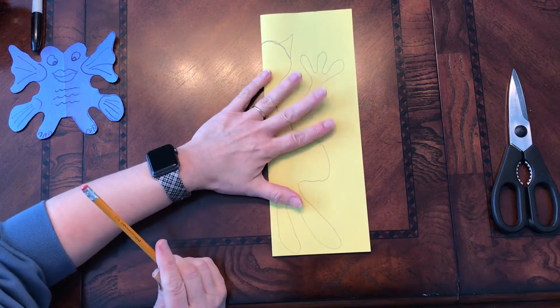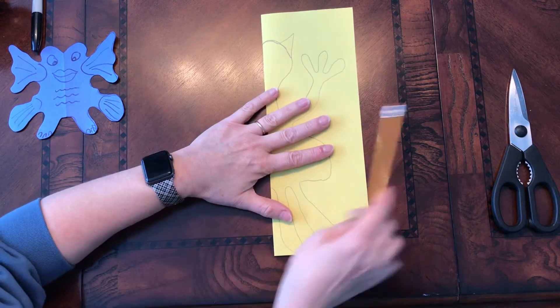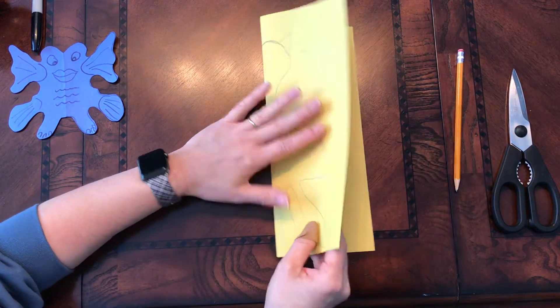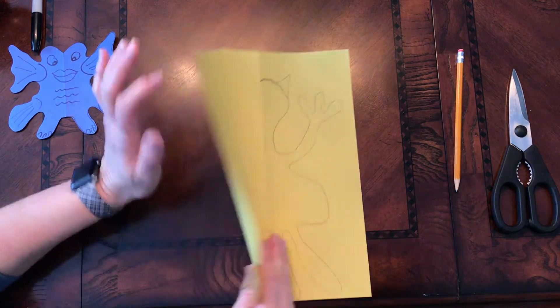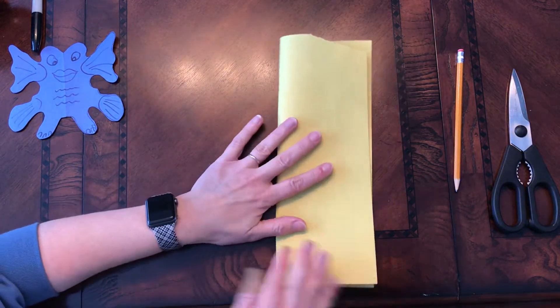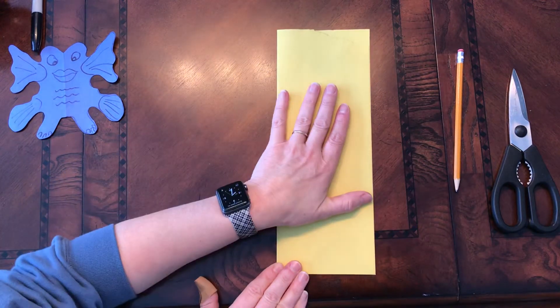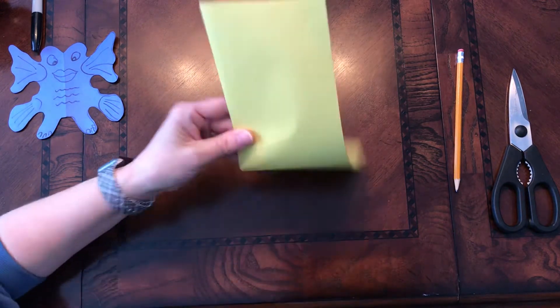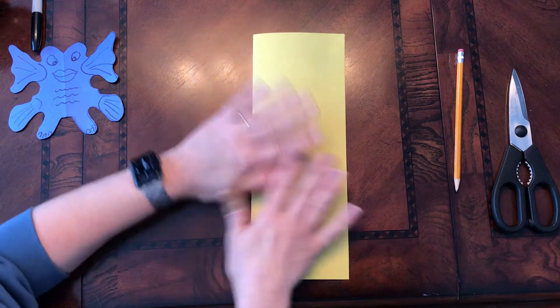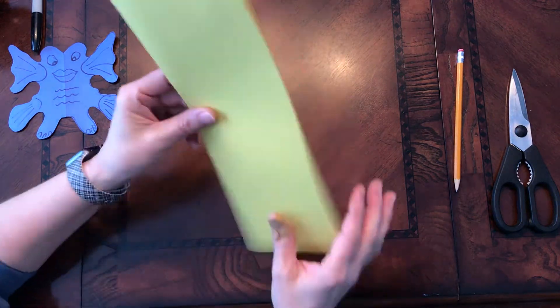So now that you've done this, and again, if you make a mistake, you know that you can take this, fold it so that the design is on the inside, and try another one on this side. And you also actually have this side. So you have a couple different ways of doing this.